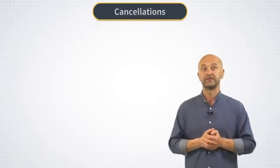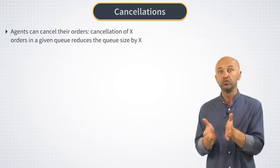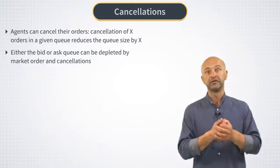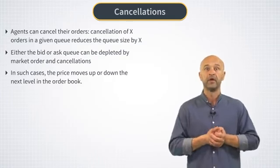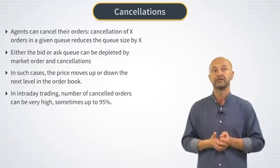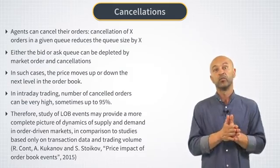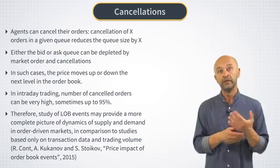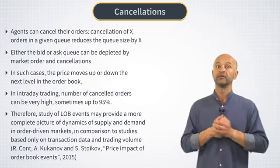Now let's talk about cancellations. Agents can cancel their orders — if an order of value X is cancelled, the queue size is reduced by X. If either side of the LOB is depleted as a result of market orders and cancellations, the price will move up or down to the next level. It turns out the vast majority of limit orders — sometimes up to 95% — is cancelled. Therefore, if we only look at actual trade events, we might miss important features of the LOB. The paper by Ramakont and co-workers looked into the importance of using non-trade data, called event data from the LOB, to study impact on prices.